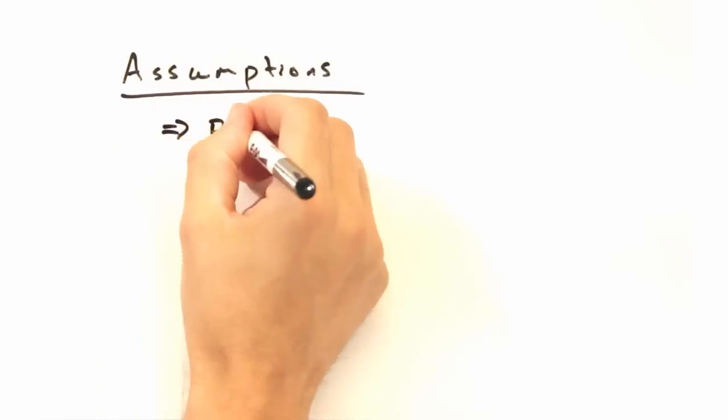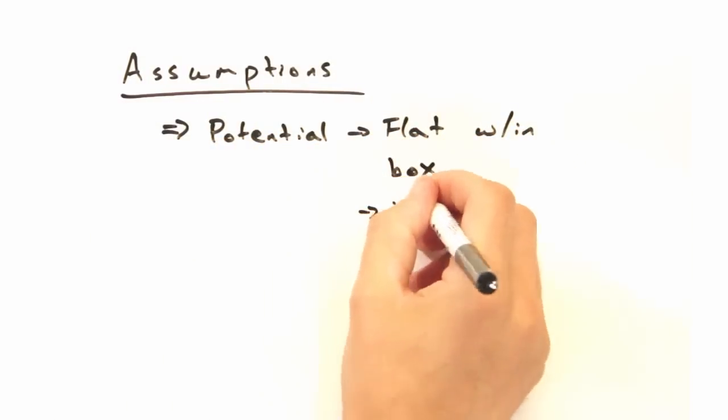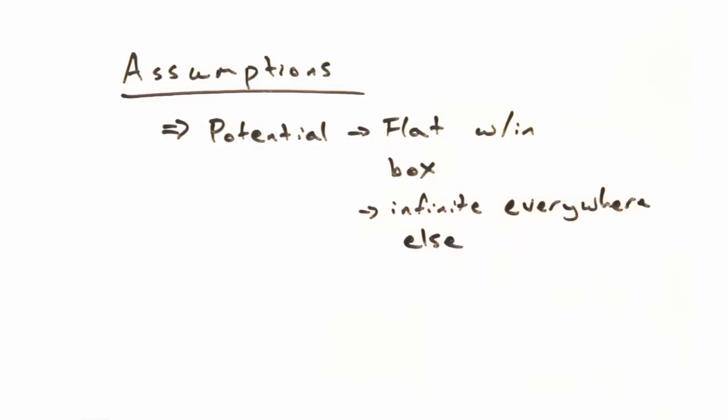One thing to note is that the potential we're using is a flat box, where v equals some constant inside the box, and is infinite everywhere else. Sounds like a completely unphysical train wreck, doesn't it? Nicole, how do you want to start solving this?